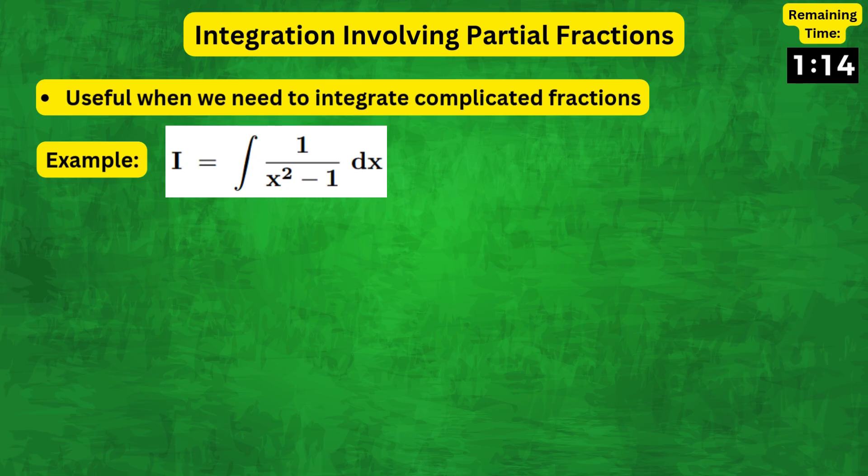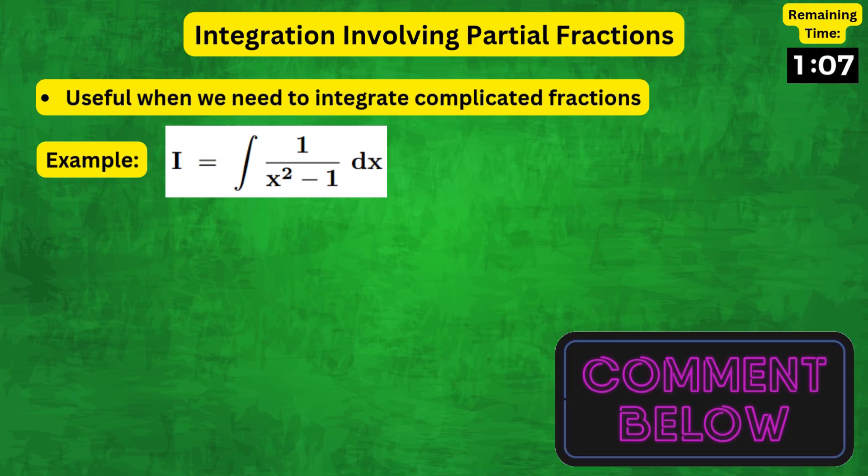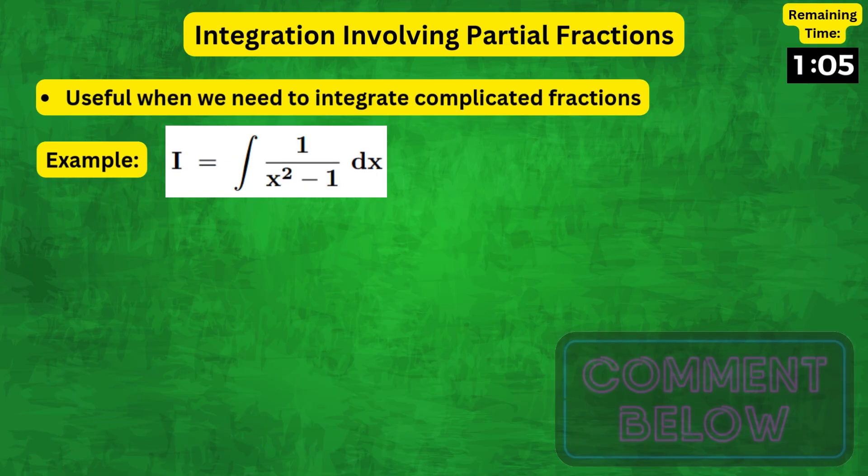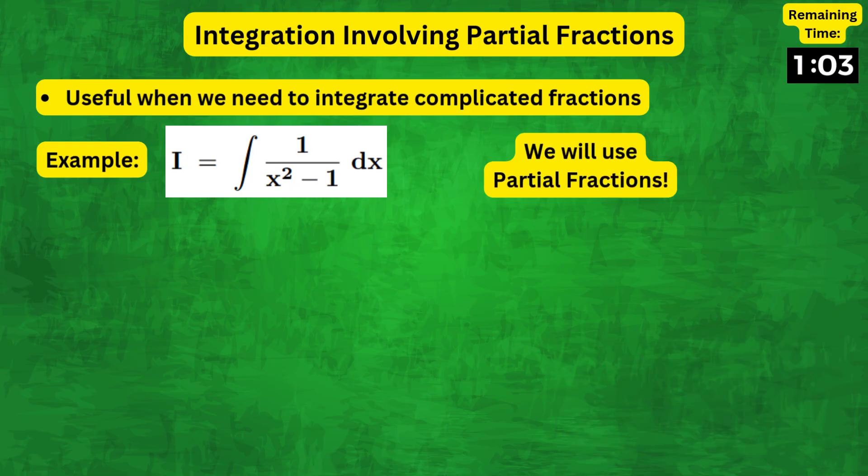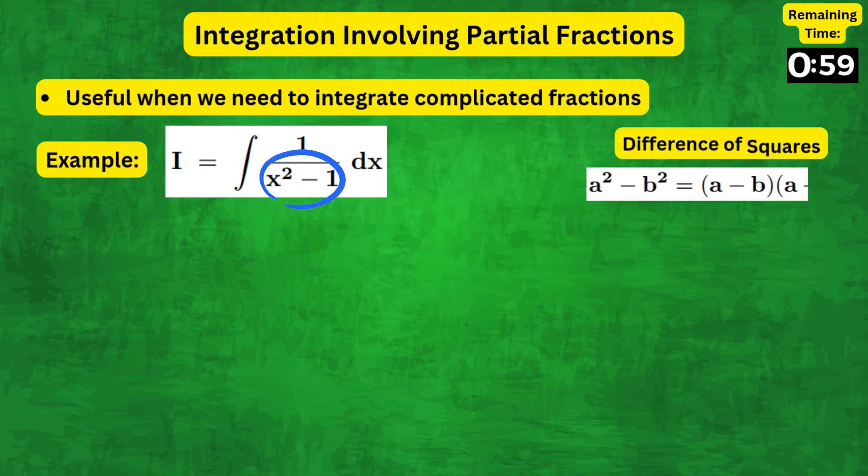Now, coming back to the complicated fractions, what if you encounter a messy fraction like 1 over x squared minus 1? Comment below how you might solve this particular integration. For this tutorial, we will use partial fractions. So, we can first factorize the denominator using the difference of squares identity.